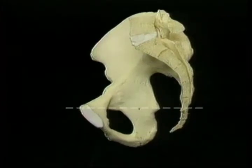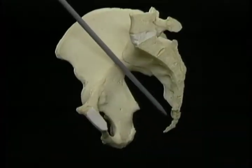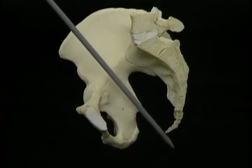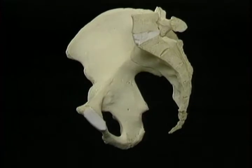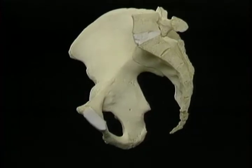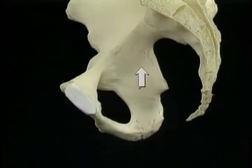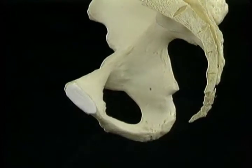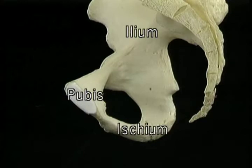The lower end of the sacrum is on a level with the top of the pubic symphysis. This big gap between the sacrum and the hip bone is called the sciatic notch. It's bridged by two major ligaments as we'll see shortly. Now we'll look at some details of the hip bone. This massively thick part of the hip bone is formed by the fusion of the ilium, the pubis, and the ischium.